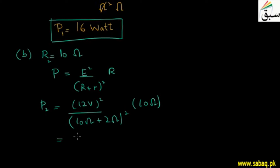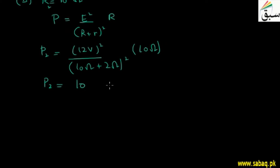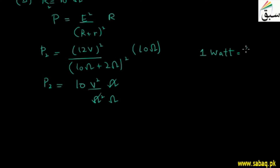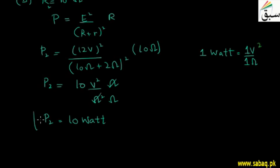When I calculated this, the value came out to 10. Multiplying and balancing units: V squared divided by ohm squared times ohm leaves V squared divided by ohm, which converts to watts. So P2 equals 10 watts, and we have confirmed there is no mistake. The power in case 2 is 10 watts.